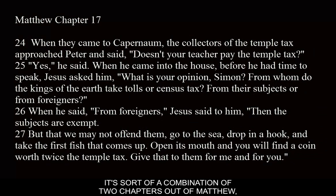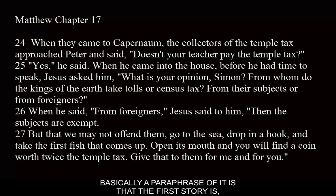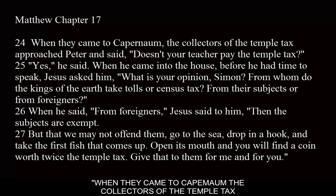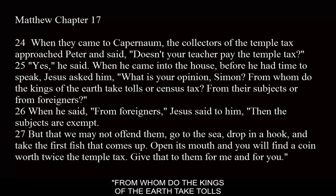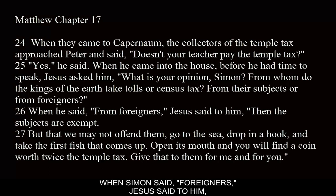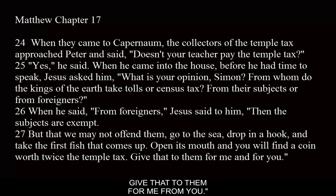The image is a combination of two chapters from Matthew — chapter 17 and chapter 22. In chapter 17, when they came to Capernaum, the collectors of the temple tax approached Peter and asked, 'Doesn't your teacher pay the temple tax?' Jesus then asks Peter, 'From whom do the kings of the earth take tolls or census tax — from their subjects or from foreigners?' When Simon said foreigners, Jesus replied, 'Then the subjects are exempt, but we may not offend them. So go to the sea, drop in a hook, and take the first fish that comes up. Open its mouth and you'll find a coin worth twice the temple tax. Give that to them for me.'